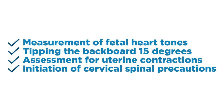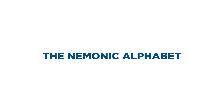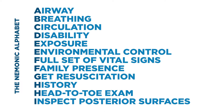I recommend you apply the mnemonic you learned in your core courses: A — Airway, B — Breathing, C — Circulation, D — Disability, E — Exposure and environmental control, F — Full set of vital signs and family presence, G — Get resuscitation, H — History and head-to-toe exam, I — Inspect the posterior surfaces. After you assign each answer choice a letter from this mnemonic, pick the one with the highest priority — that is, the earliest letter in the alphabet.